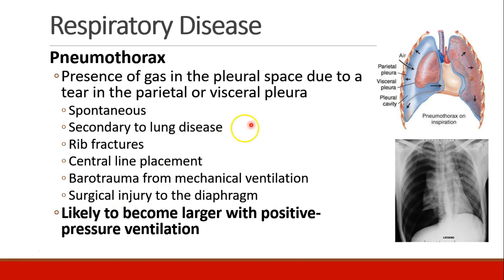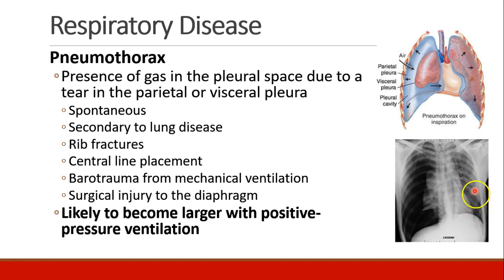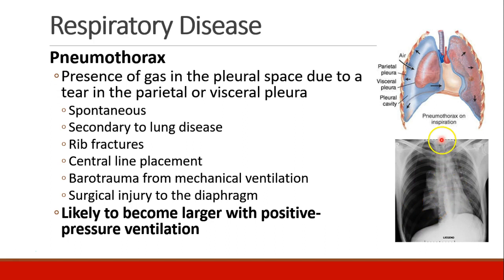Lots of things can cause a pneumothorax: they can happen spontaneously or after lung disease, rib fractures, puncture of the pleura during central line placement, over-inflation of the lungs causing mechanical ventilation barotrauma, or if a surgeon injures the diaphragm and air comes from the abdominal cavity into the pleural space. On a chest x-ray, on one side you see cloudiness — normal lung tissue — and on the other side it's clear, which is not nice because all we see is air without any lung tissue. This is a pneumothorax, and you can see the lung all squished down and collapsed. You can also see the trachea deviating to the right. Pneumothorax can get worse with positive pressure ventilation, which is a big issue for us in anesthesia.